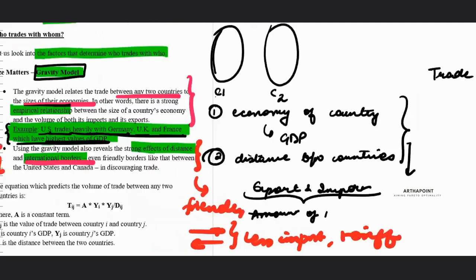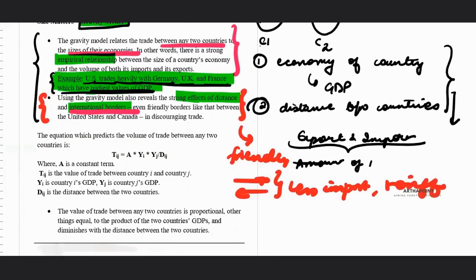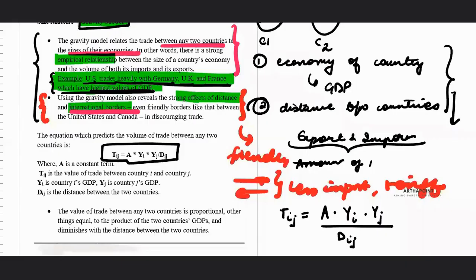Based on this, we can actually come up with an equation that tells us the trade or the value of trade between two countries, country I and J. This tells us that the value of trade between country I and J actually is dependent on a constant term A, it depends on the GDP of country I, on the GDP of country J, and inversely with the distance between the two countries.